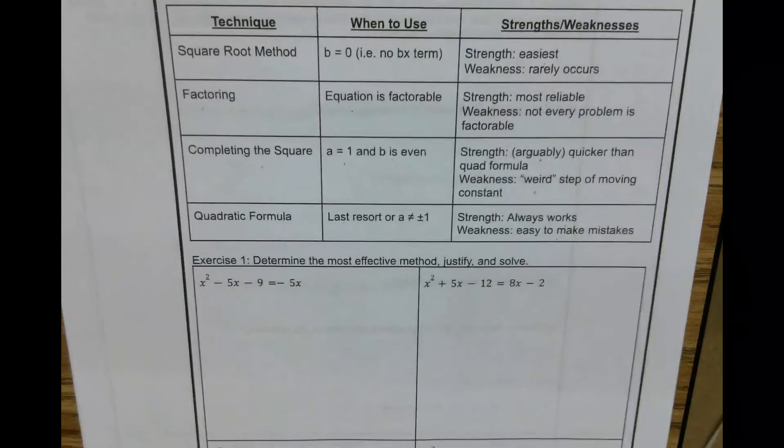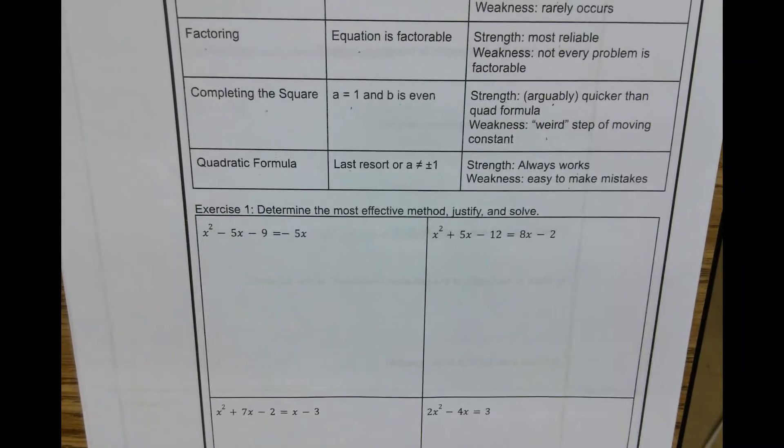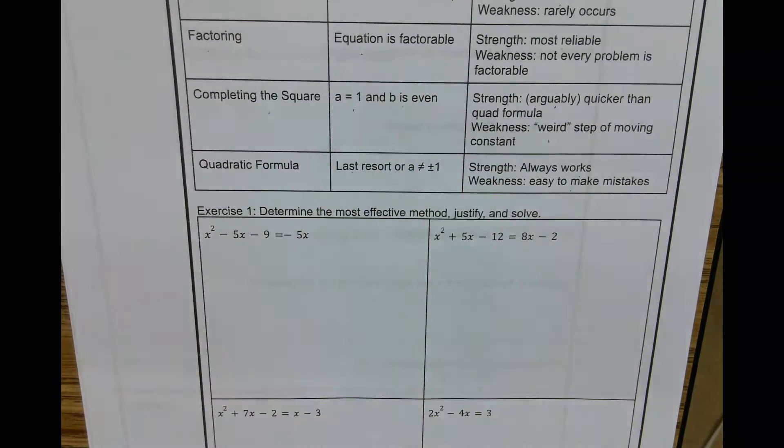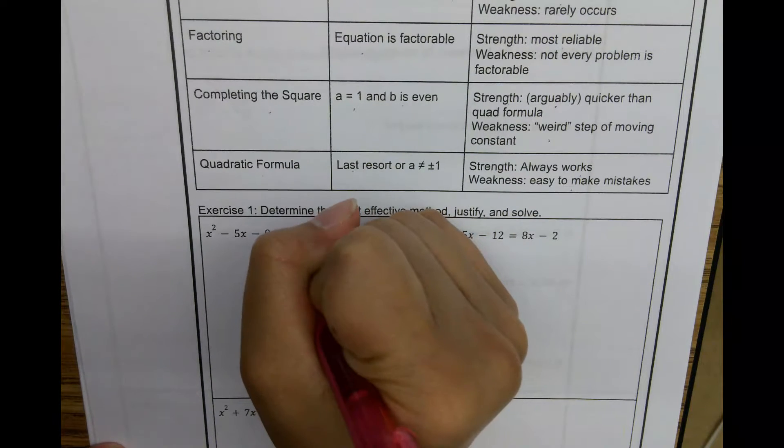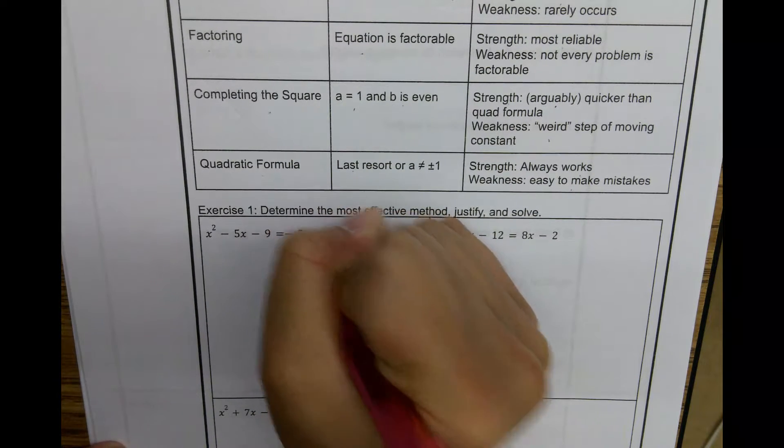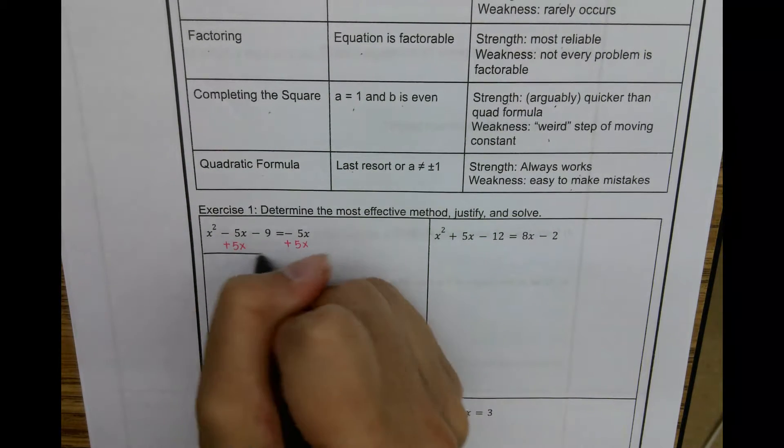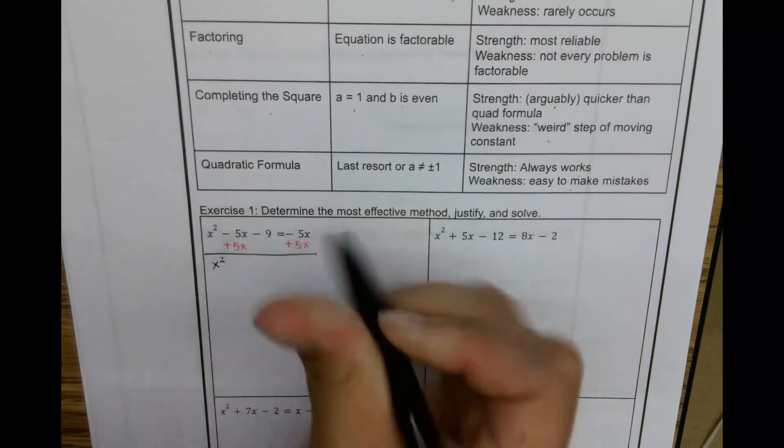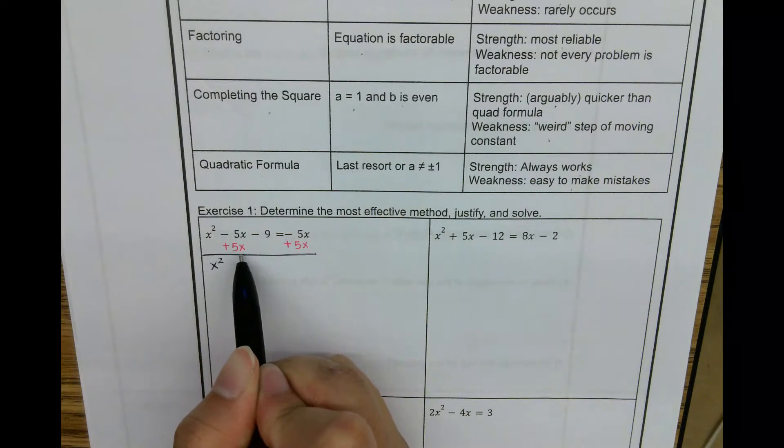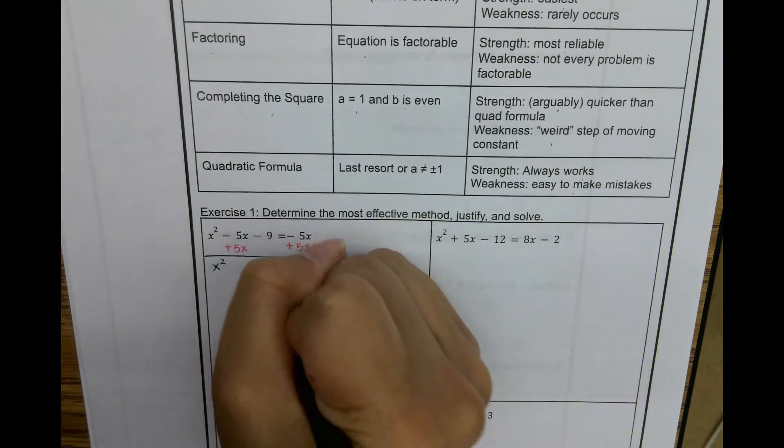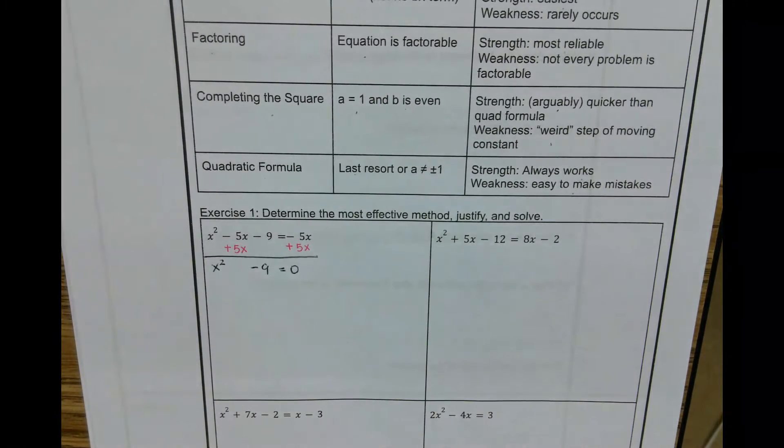So here, we're going to determine the most effective method and we're going to justify why and we're going to solve it. So here, what we're going to do is we're going to move the x's to one side. Or in this case, I want to make it equal to zero. So since this is a minus 5x, I'm going to add 5x. This leaves me with x squared. So the minus plus 5x, it ends up being 0x. So no more x. And then minus 9 equals 0. So this is my thing.